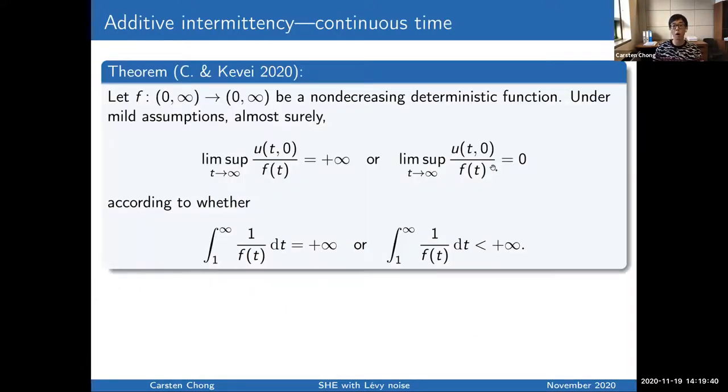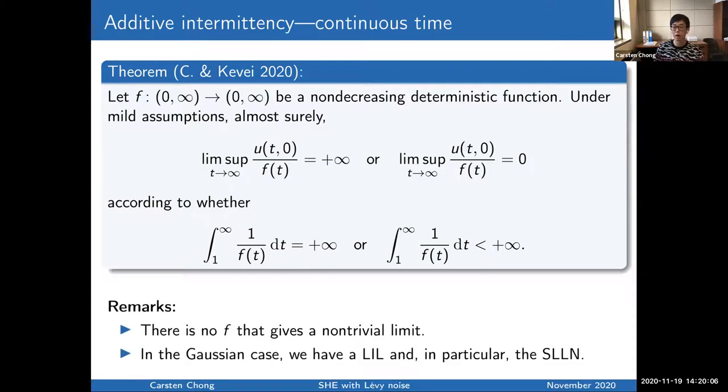So actually you can even show more. When you take a non-decreasing deterministic function f, you may wonder whether you can normalize the solution in such a way that you see a non-trivial limit for the lim sup. And this result tells you that it's not possible. So whenever you have such a function f and you normalize the solution by f, the lim sup will always be plus infinity or zero, depending on whether one over f is integrable around infinity or not. So there's no proper upper gauge function, so to speak. And this is different from the Gaussian case where we have a law of the iterated logarithm. And also we would have a strong law of large numbers in this case. So the additive intermittency is exclusive to the Lévy case.